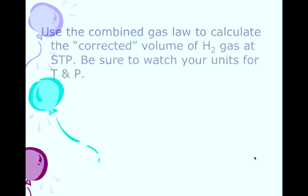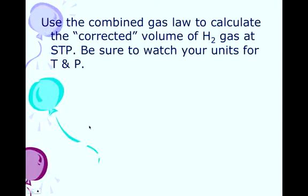Moving on to the next question. Use the combined gas law to calculate the corrected volume of hydrogen gas at STP. Make sure you watch your units for temperature, because remember, temperature always has to be in Kelvin, and make sure all of your units for pressure match each other.